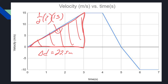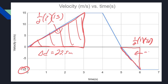One region to watch: if the graph dips below the x-axis, you get a negative area. For example, one half times one times 10 gives negative 5. Negative area means you're going backwards.